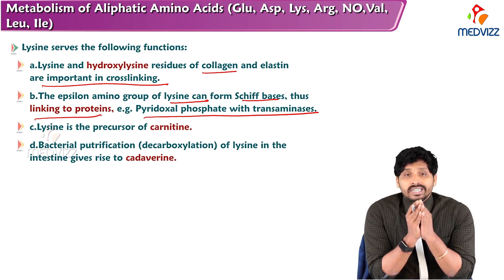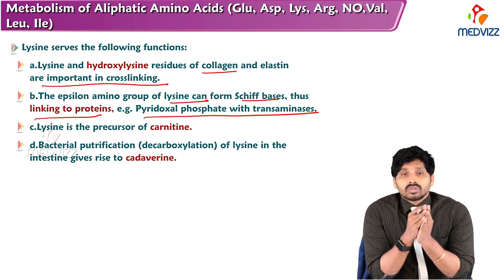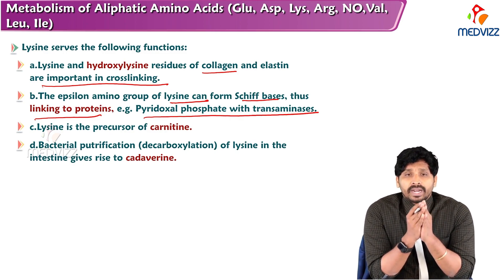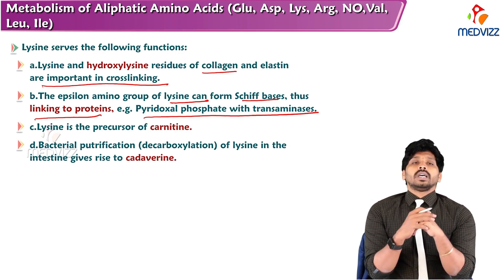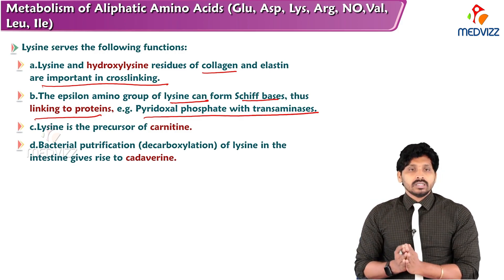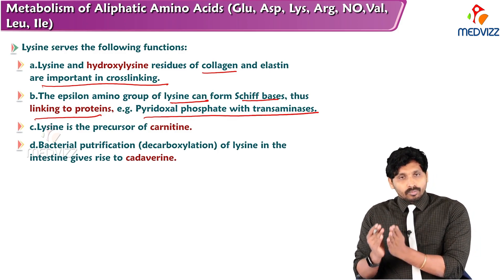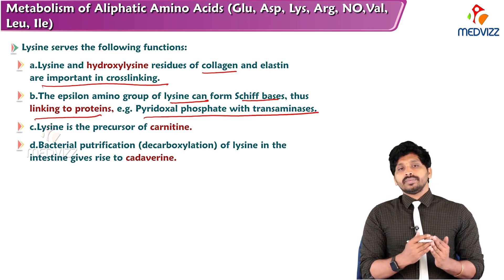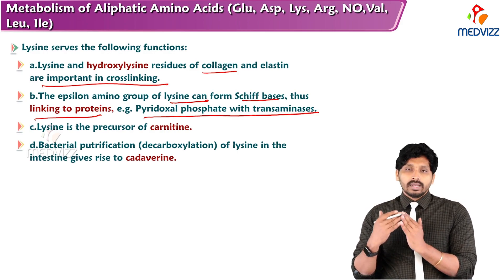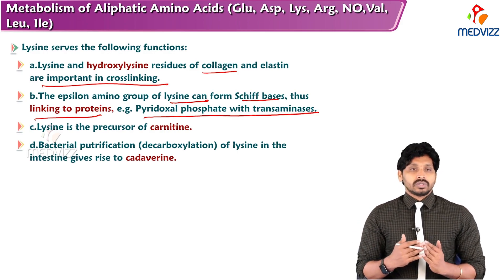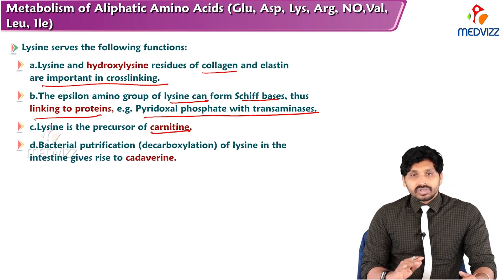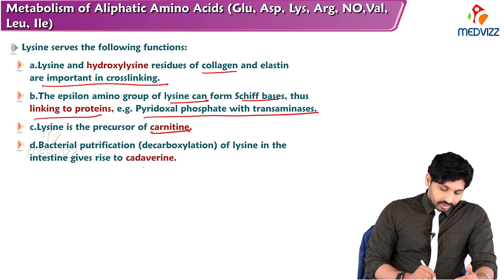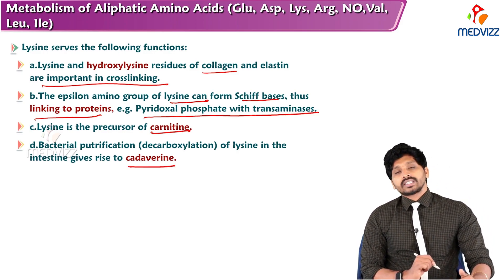Lysine present in enzymes forms Schiff bases linking to proteins like pyridoxal phosphate, which plays a major role in transamination reactions. Lysine is also a precursor of carnitine. Bacterial putrefaction of lysine in the intestine gives rise to cadaverine, which is excreted in the stool.